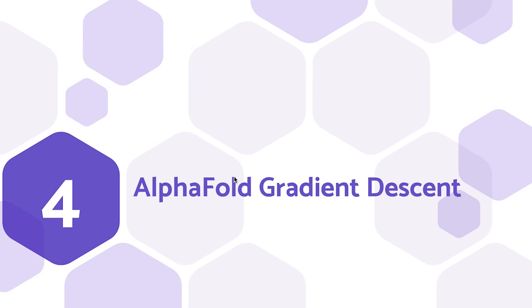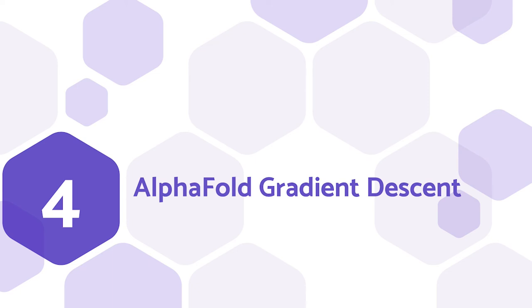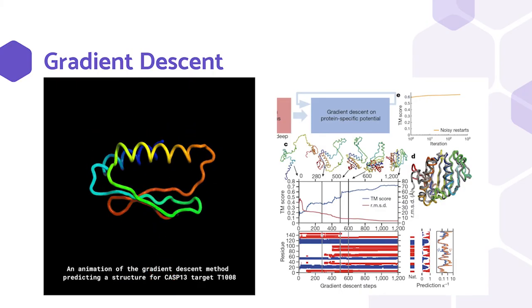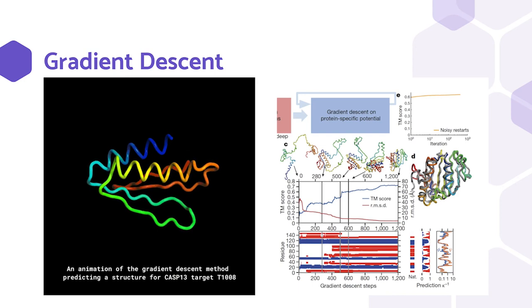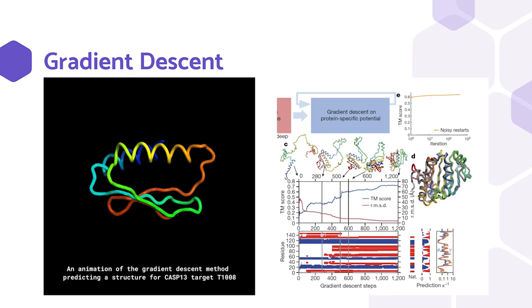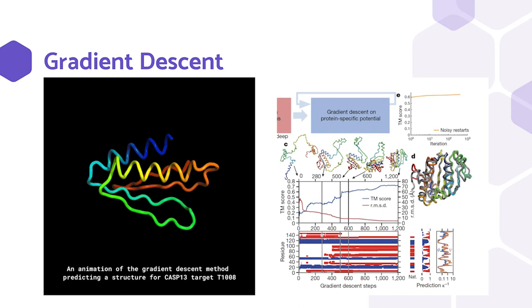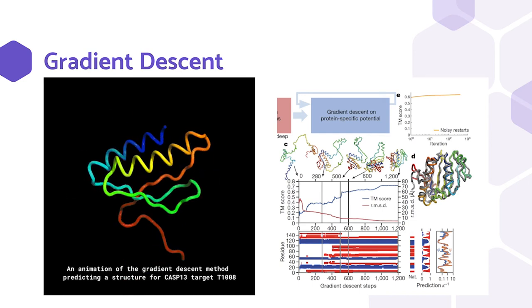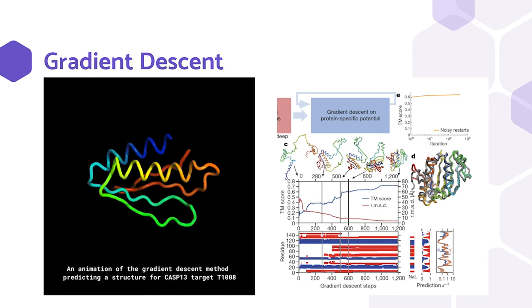To simplify gradient descent, we can think of the error in terms of a two-dimensional graph. The network is able to estimate what direction the weights need to move by attempting to find a local minima. After the direction of the adjustment is calculated, a process called backpropagation is used to adjust all the weights in the neural network.